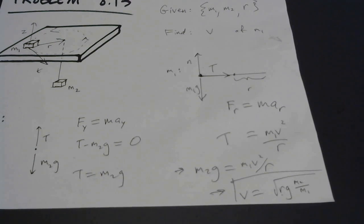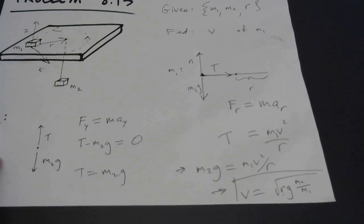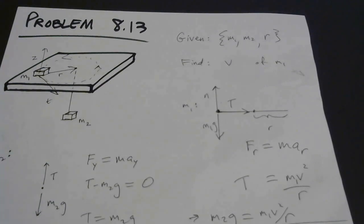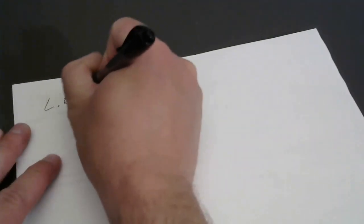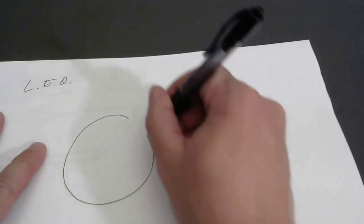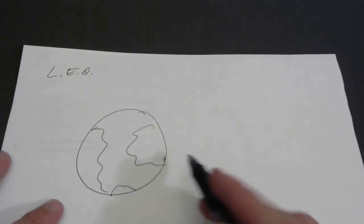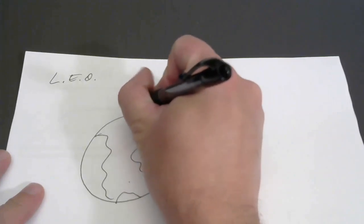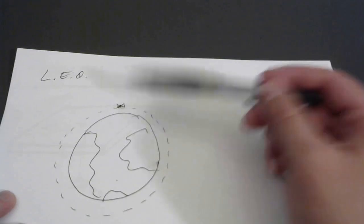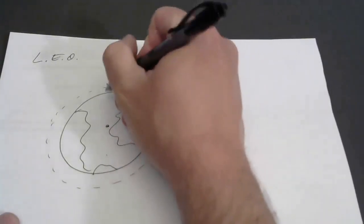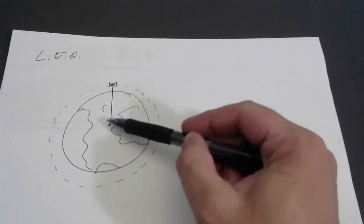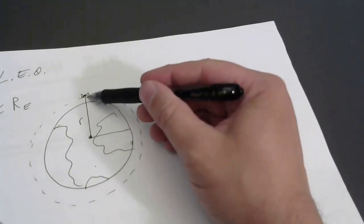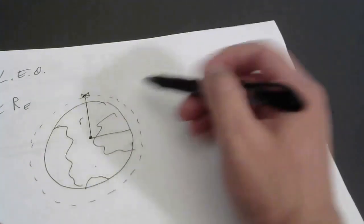That's all there really is to say about that problem, but don't forget that √(Rg). I'm going to relate that right now to orbit around a planet. For low Earth orbit, here's planet Earth and a satellite orbiting really close to the surface. Lowercase r is the distance of the satellite from the center of the Earth, and for low Earth orbit, r is basically equal to the radius of the Earth — about 6,000 kilometers.